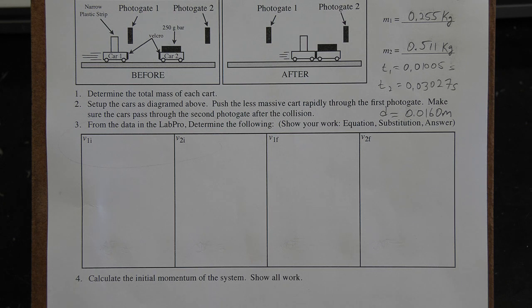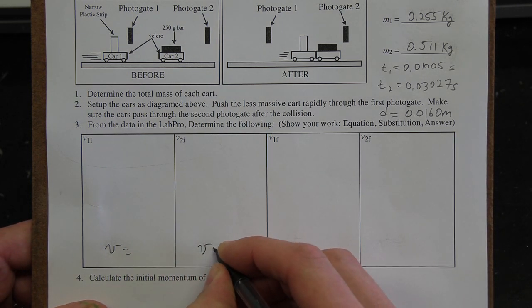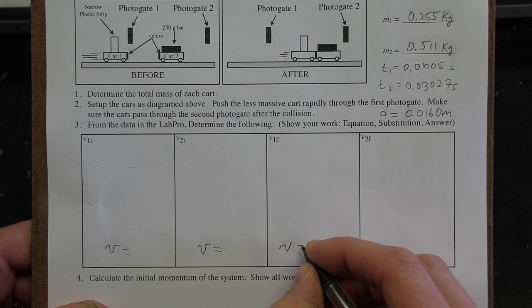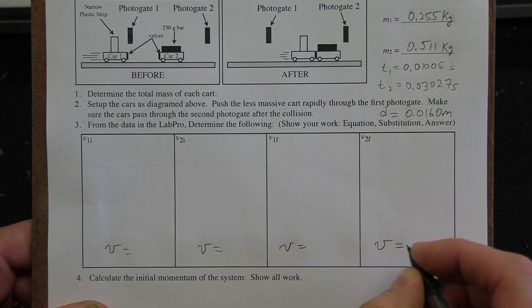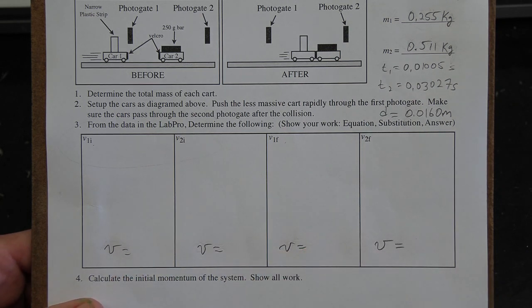Well, hopefully what you just saw clarified things. Because again, you should now be able to calculate or determine the four velocities of the car. Car one before and after, car two before and after the impact. So if you haven't already done so, go ahead and determine those four velocities now.